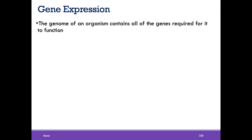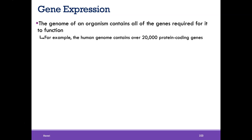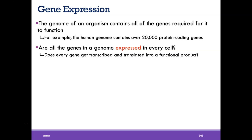We know that the genome of an organism has all the genes required for it to function. The human genome specifically has over 20,000 genes that encode for specific proteins. But are all the genes in a genome expressed in every cell? Does every single one of our cells make over 20,000 different proteins? Does every gene get transcribed and translated into a functional product? The answer is no.